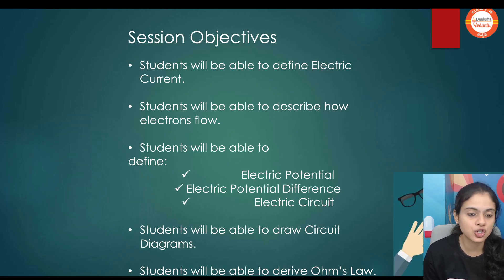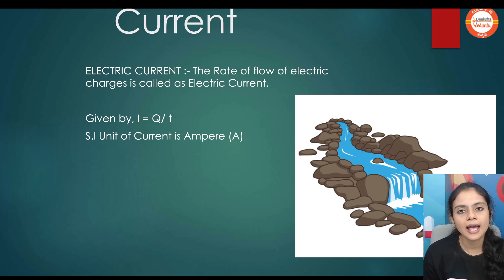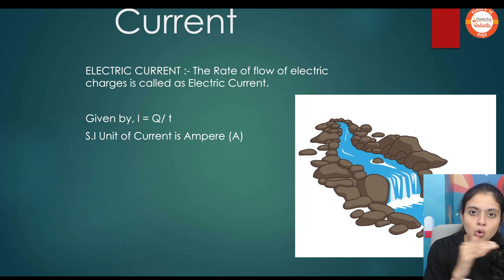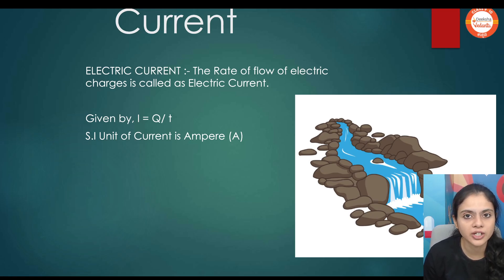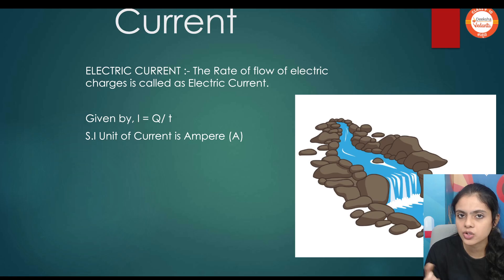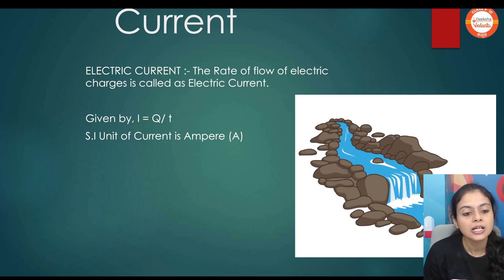Let's start today's session. Every concept will be discussed. What is current? Very basic, very easy definition. Electric current is nothing but the flow of electrons — the flow of electric charges is called electric current. The SI unit is Ampere. It is given by the formula I is equal to Q by T, where Q is charge and T is time. Rate of flow means charges are flowing with respect to time. The other SI unit can be coulomb per second.